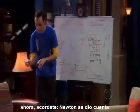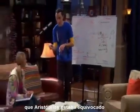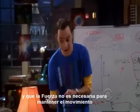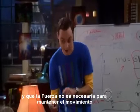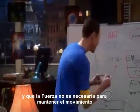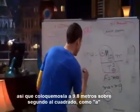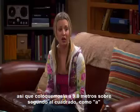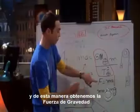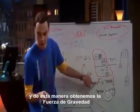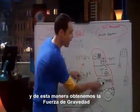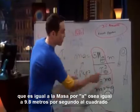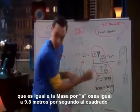Now remember, Newton realized that Aristotle was wrong and force was not necessary to maintain motion. So let's plug in our 9.8 meters per second squared as A, and we get force, Earth gravity, equals mass times 9.8 meters per second per second.